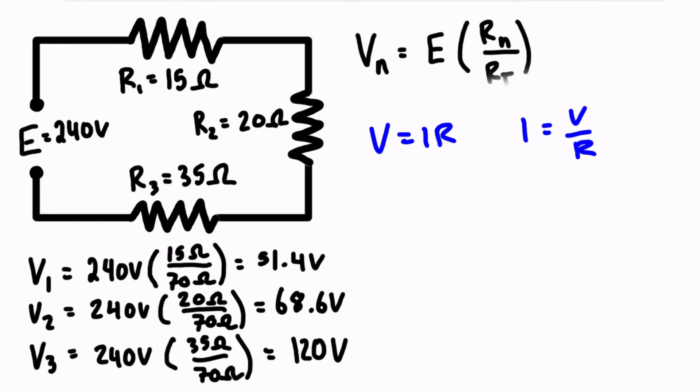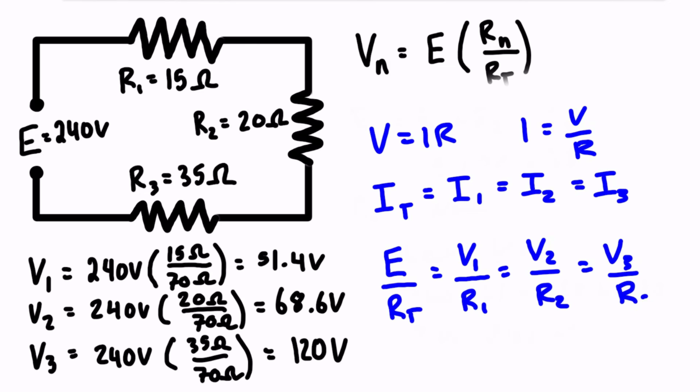And in a series circuit, the current through each resistor is going to equal the total current because the current only has one path to flow. So I total is just equal to I1, which is equal to I2, which is equal to I3. So I total is our source voltage, which sometimes we use the capital letter E, over the total resistance. And that's equal to I1. And I1 is just equal to the voltage drop of one over resistance one. I2 is just equal to V2 over R2. And I3 is equal to V3 over R3.